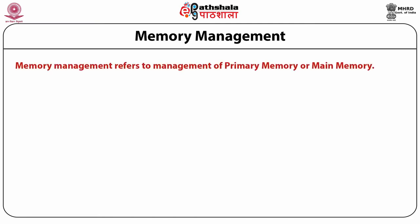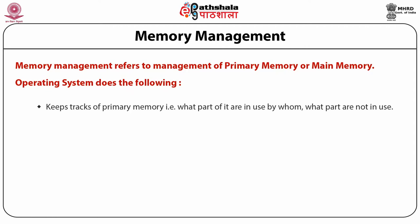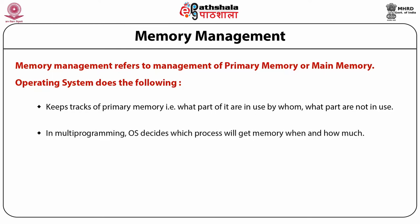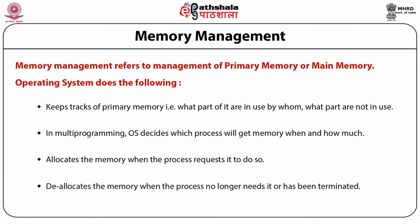Memory management refers to the management of primary memory or main memory. The operating system keeps track of the primary memory — which parts are in use, by whom, and which parts are not in use. In a multiprogramming operating system, it decides which process will get more memory, when, and how much. It allocates memory when the process requires it and deallocates it when the process no longer needs it or has been terminated.